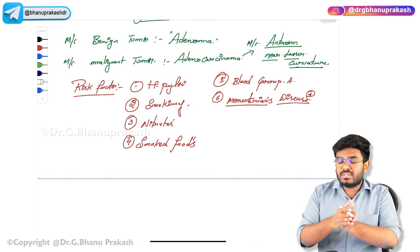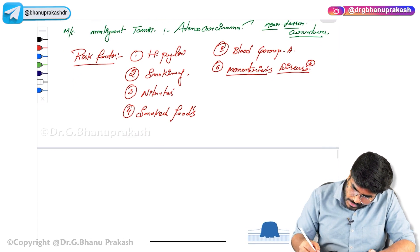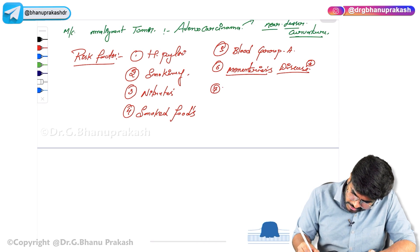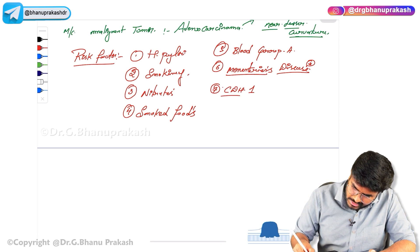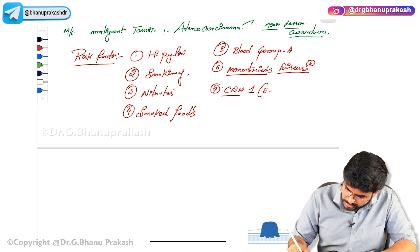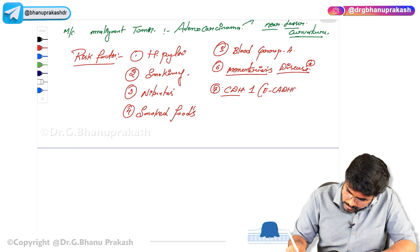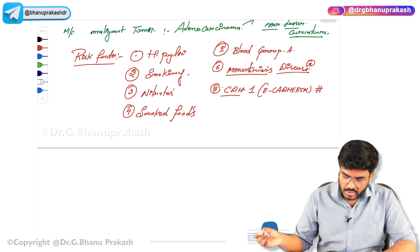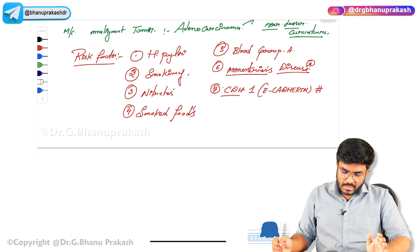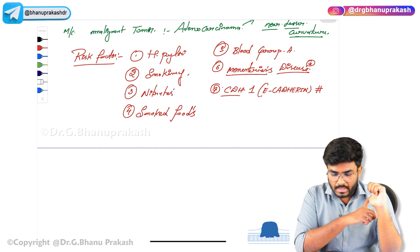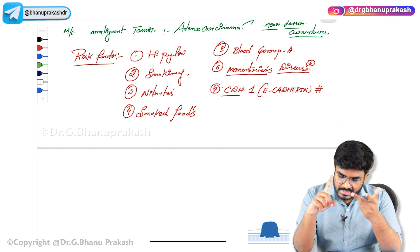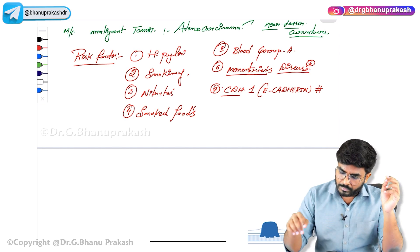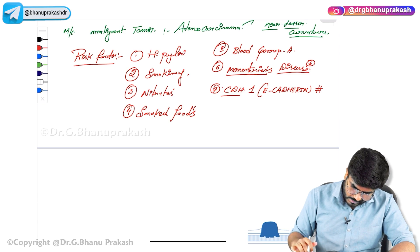Menetrier's disease is a risk factor for gastric adenocarcinoma. There are also certain gene mutations — CDH1 gene, which codes for E-cadherin, a protein that acts like biological glue helping in cell adhesion. Mutation of this gene will also cause cancer. So the risk factors include: Helicobacter pylori, smoking, nitrates, smoked foods, blood group A, Menetrier's disease, and CDH1 gene mutation.